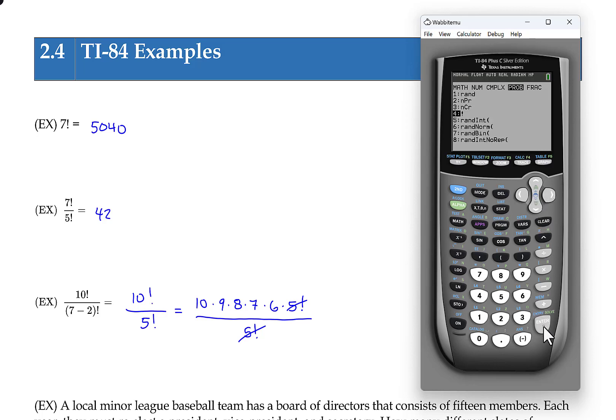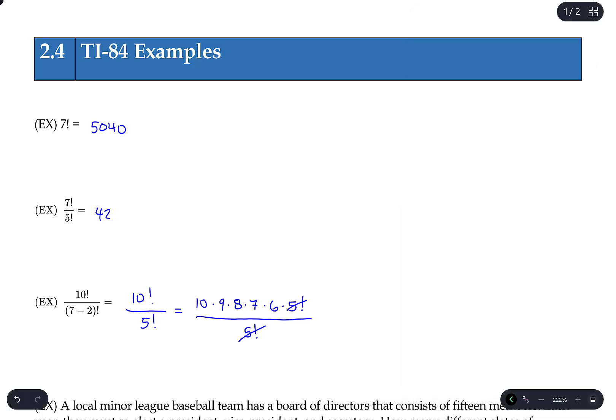If you ever are using factorial in this class, you're generally only using it for just getting the factorial of a number. Now you could even still do 7 minus 2 in parentheses and then the factorial after this. So there's no need to actually get the value of 7 minus 2 first and then do the factorial. Regardless, you're going to get the same answer. So 30,240.